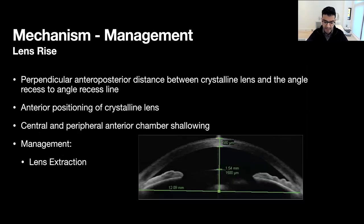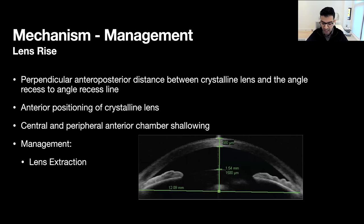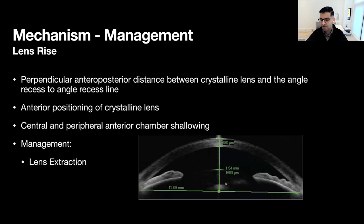If the primary mechanism is lens rise, simply doing a peripheral iridotomy in the peripheral iris likely won't resolve the actual angle closure. The underlying mechanism is not an imbalance of pressure between the anterior chamber and the sulcus space — so putting that hole in the peripheral iris will not resolve the underlying mechanism, which is this large lens pushing everything forward. To truly fix or open an angle in a patient with lens rise, really the only underlying option is to consider lens extraction.